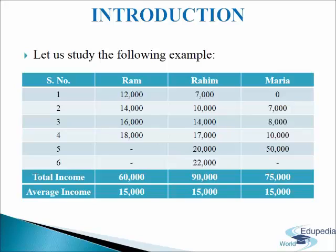You can see in the table that the average income is the same, but there are considerable differences in individual incomes. It is quite obvious that averages tell only one aspect of a distribution — that is, a representative size of the values. To understand it better, you need to know the spread of values too. In Ram's family, differences in incomes are comparatively lower. In Raheem's family, differences are higher. And in Maria's family, the differences are the highest.